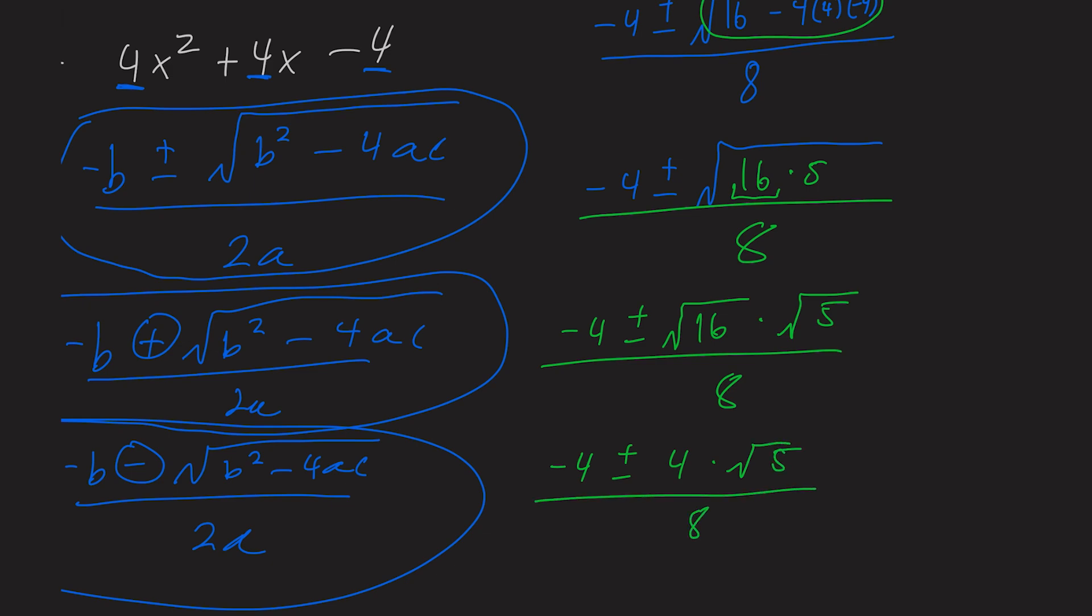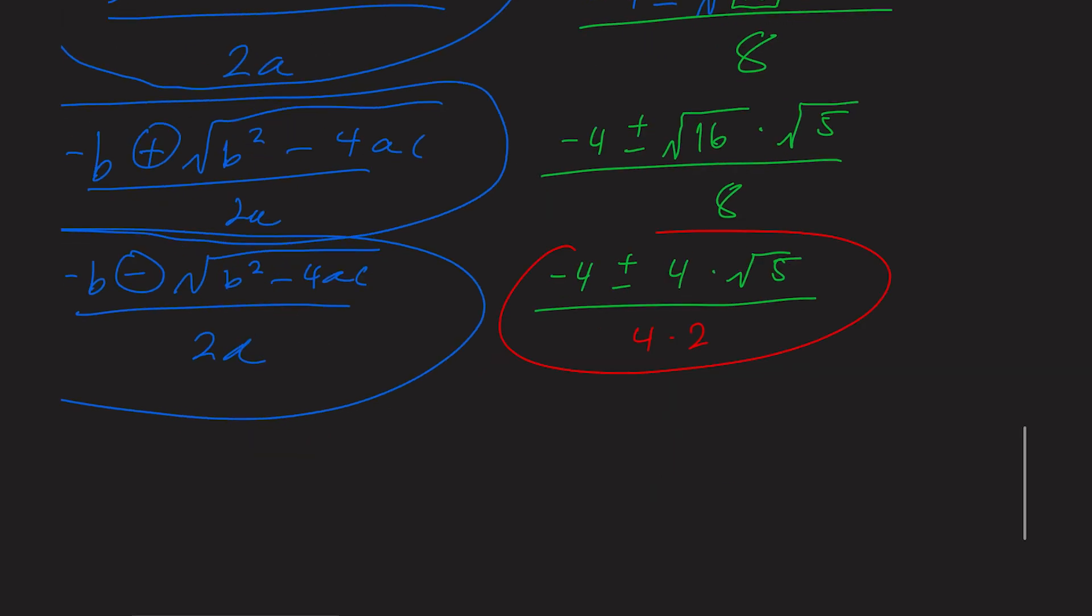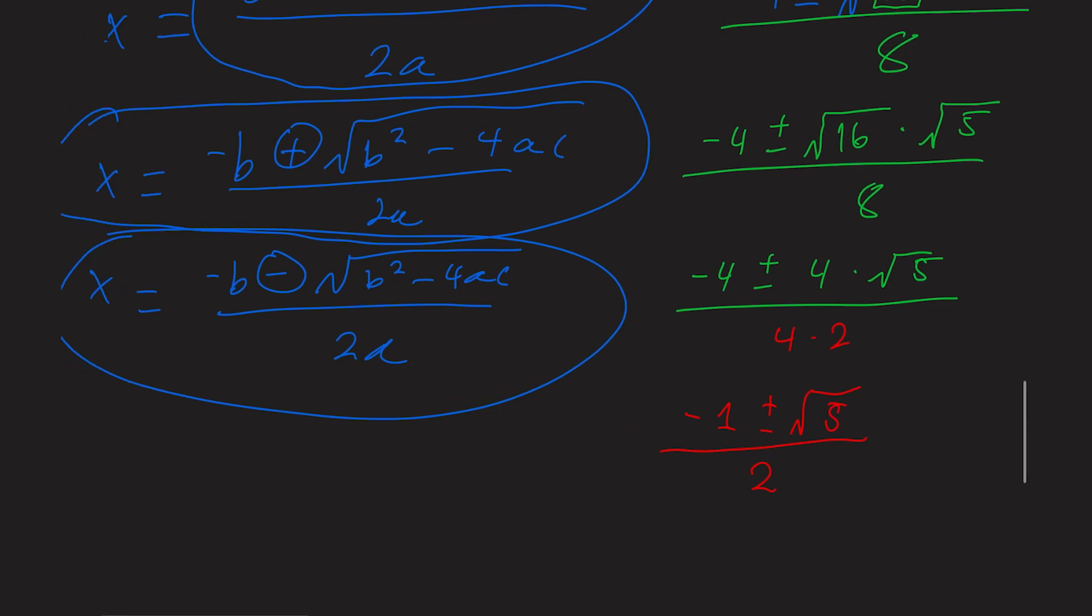Now, being that 8 is simply the same as 4 times 2, we're going to simplify this again by dividing the whole expression by 4, which leaves us with negative 1 plus or minus rad 5 all over 2. And now that it is in simplest form, we can finally break off our plus and our minus into their two separate equations as shown here.